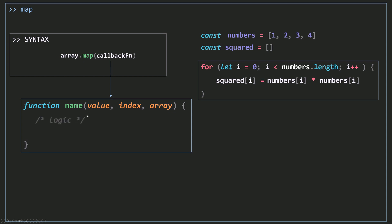Inside your function you can do any logic or calculations you want, but at the end you must use a return statement — you have to return a value. That value is going to be pushed into a new array because map doesn't change your original array. So if you call map on the numbers array, those original values will not be changed; the change will be saved into a new array.